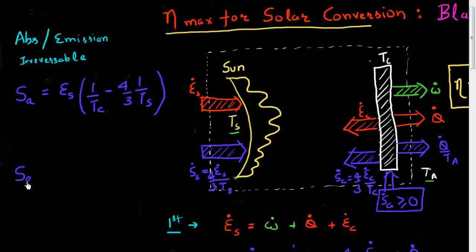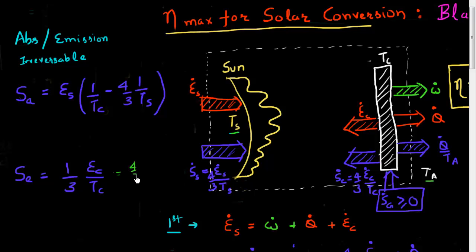Similarly, there's entropy associated with the emission process. This is given by the process where the energy located inside the cell is given out in the form of radiation. The entropy associated with this emission process is essentially (1/3) × EC divided by the temperature of the cell. This makes sense because when the energy is emitted out, it has an entropy term of (4/3) × EC/TC, whereas when located inside the cell, it has an entropy of EC/TC. So there's an extra (1/3) × EC/TC term associated with this emission process.